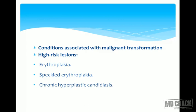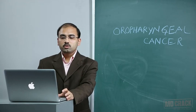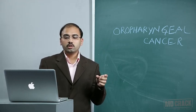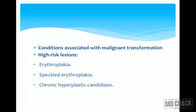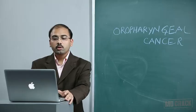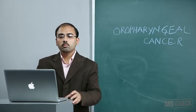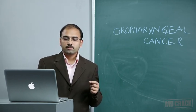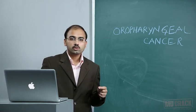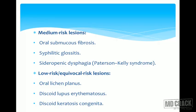Various lesions occurring as premalignant conditions in upper airway malignancies include erythroplakia, speckled erythroplakia, and chronic hyperplastic candidiasis. These are high-risk lesions with more chances of developing into malignancy, and are called premalignant lesions. Medium-risk lesions include oral submucous fibrosis, syphilitic glossitis, and pseudosideropenic dysphagia, also called Patterson-Kelly syndrome.